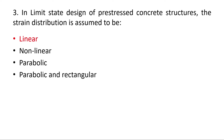Question 3: In the limit state method of design of prestressed concrete structures, the strain distribution is assumed to be linear. This is based on the assumption that plane sections before bending remain plane even after bending. So the strain diagram is always linear — Option A is correct.